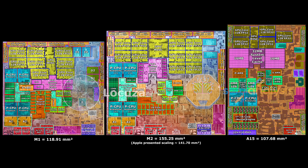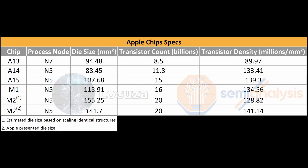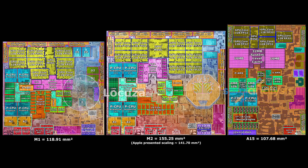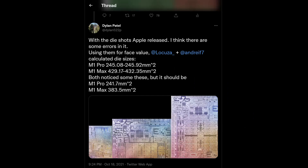Apple presented an unmarked image of both M1 and M2, and this showcased that M2 was 141.7 millimeters squared if you did the area, but we believe Apple modified this die image. This wouldn't be the first time that Apple did this. They did the same with the M1 Max, where they hid the die-to-die connections used in the M1 Ultra, among a few other things related to the general sizing.